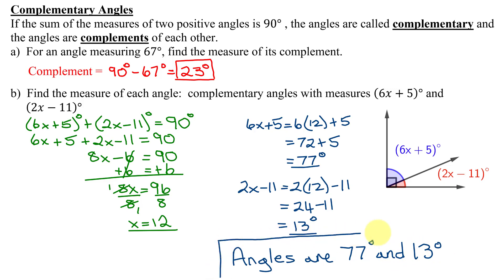And double check to make sure we got this correct. Does 77 plus 13 add up to 90 degrees? Yes. So we know we have the problem correct.